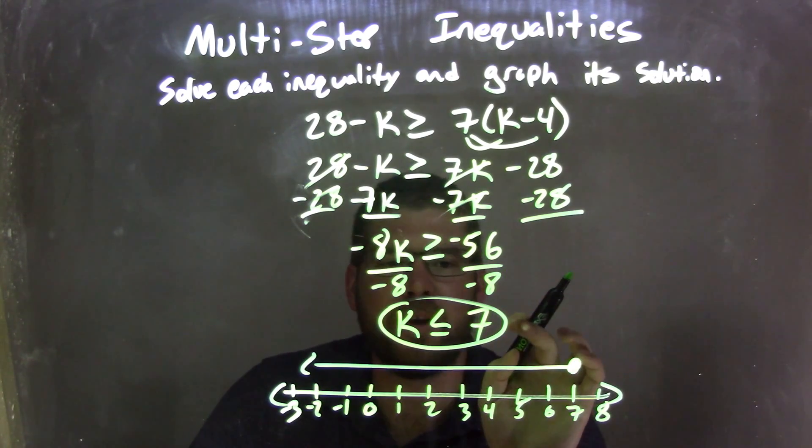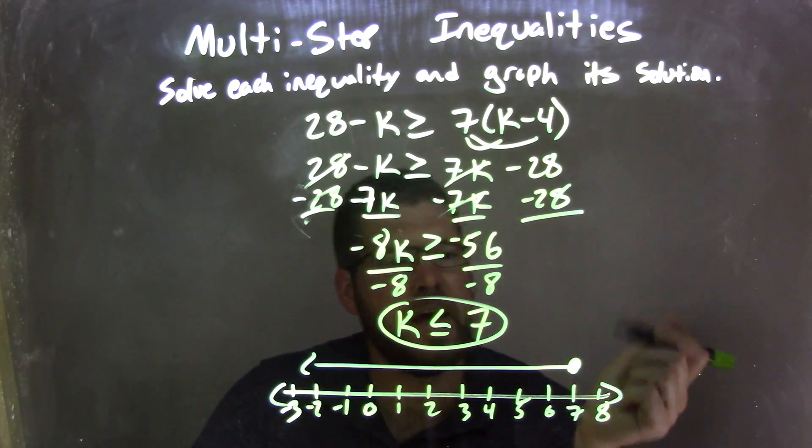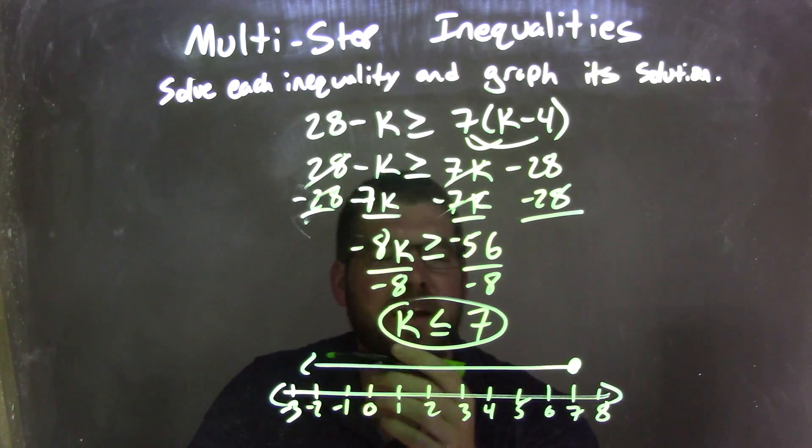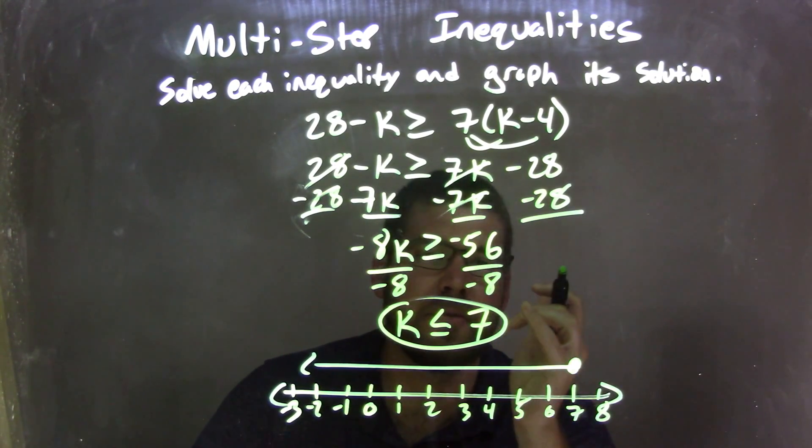So now we have k is less than or equal to 7. I need to graph it. I have a closed circle at 7 because it can equal 7, and then I put my arrow to the left, saying that k is less than 7 also. Now I have a graph that matches our final answer, which is k is less than or equal to 7.